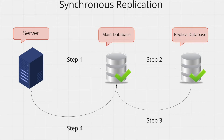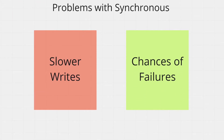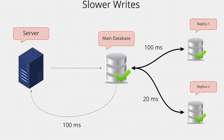Your main database and your replica can be in two separate continents — one in the US and one in Europe — so this latency can be quite high. But at least when the server returns a response to the user, we know that the data has been safely written and replicated. So what are the problems with synchronous replication? There are two main problems: slower writes and chances of write failure. As explained, the server has to wait before the replicas have confirmed that they wrote the data correctly, which means write performance suffers.